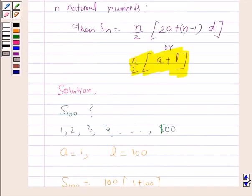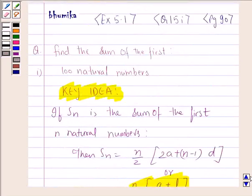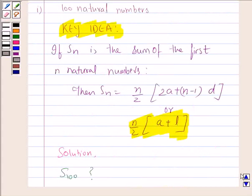So in order to do this question, what we need is very simple concept. First, what is a natural number? Any number which starts from 1 is a natural number. And we must remember this formula, any of these formulas.